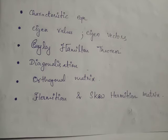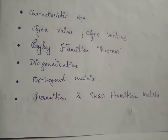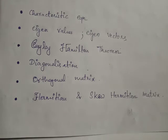Next, we moved on to the Cayley-Hamilton theorem, which states that every square matrix satisfies its own characteristic equation. The Cayley-Hamilton theorem helps us find the nth power of a square matrix A, as well as the inverse of a square matrix A.